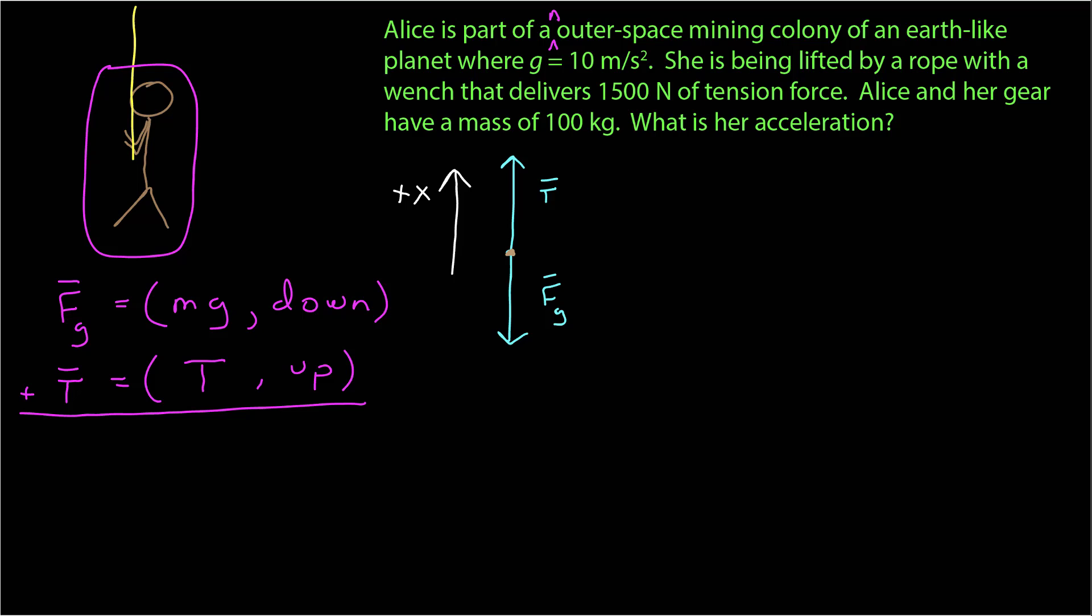So I've written down explicitly the vector form of these forces, their magnitude and their direction. The magnitude of the gravitational force is M times G, the mass times the acceleration due to gravity, and it is pointing down. The tension has some magnitude, which I just call T, and it is pointing up. Given my choice of coordinate system, the gravity is pointing in the negative x direction, and the tension is pointing in the positive x direction.